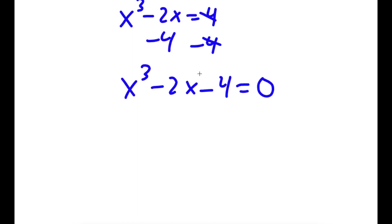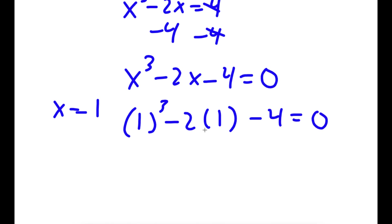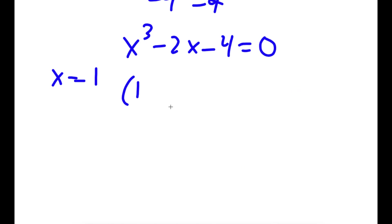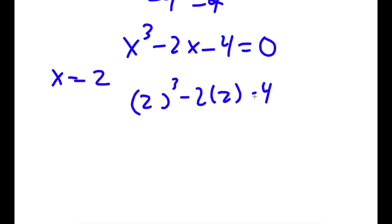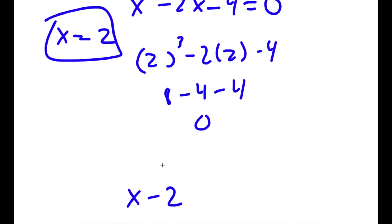To solve this, I'm going to first get one value of x by testing values. Testing x equals 1: 1³ minus 2(1) minus 4 equals 1 minus 2 minus 4 which is negative 5, so that's wrong. Testing x equals 2: 2³ minus 2(2) minus 4 equals 8 minus 4 minus 4 which is 0. So x equals 2 is a solution, meaning x minus 2 is a factor.